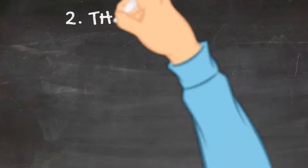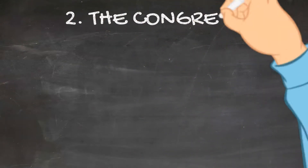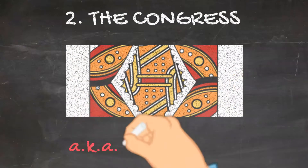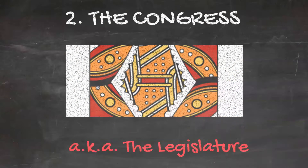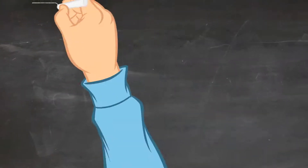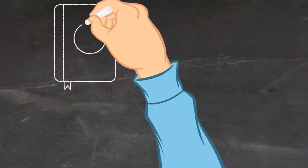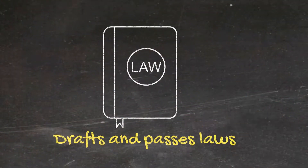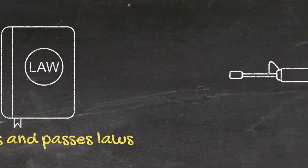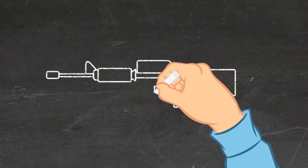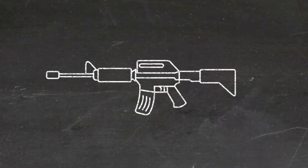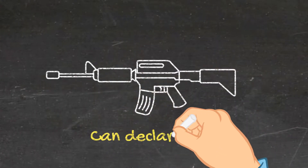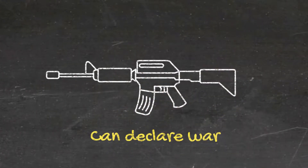One of these three branches of government is the US Congress, which has a number of specific powers, its most important being the drafting of laws — a considerable power, I think you'll agree. Despite the president being the commander-in-chief of the armed forces, Congress alone can declare war.